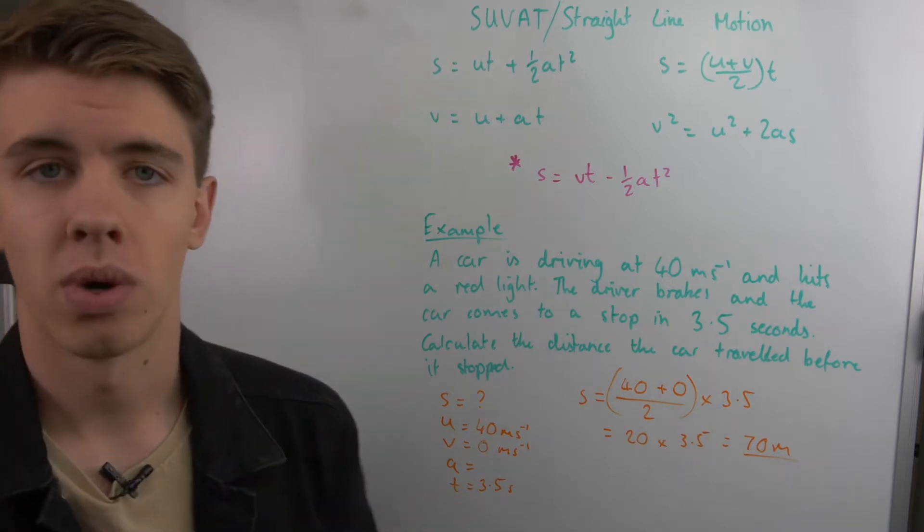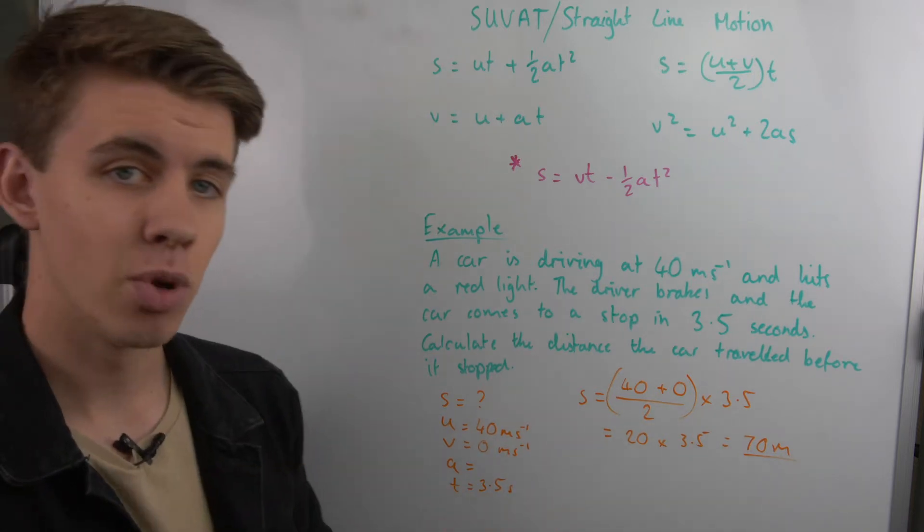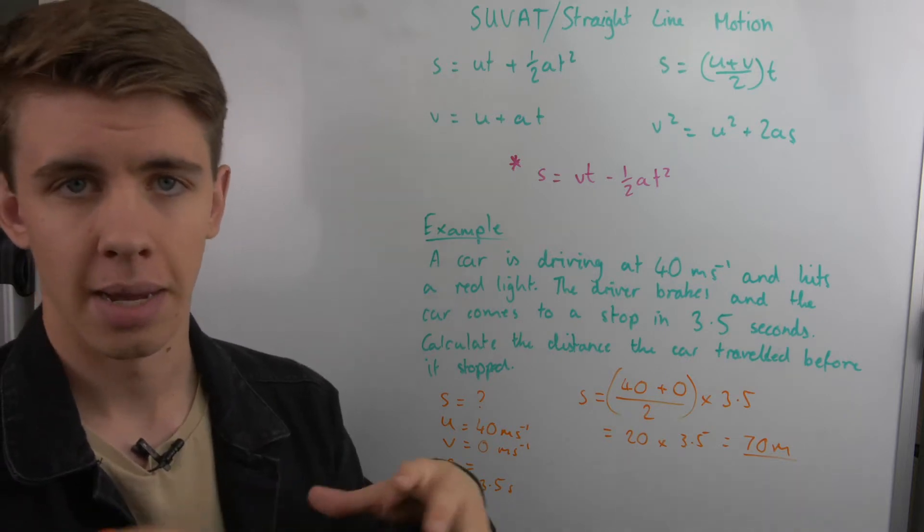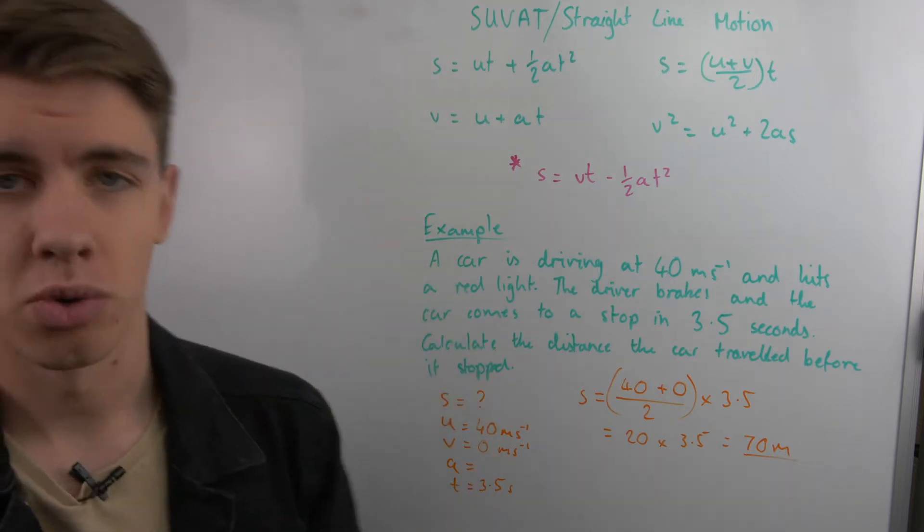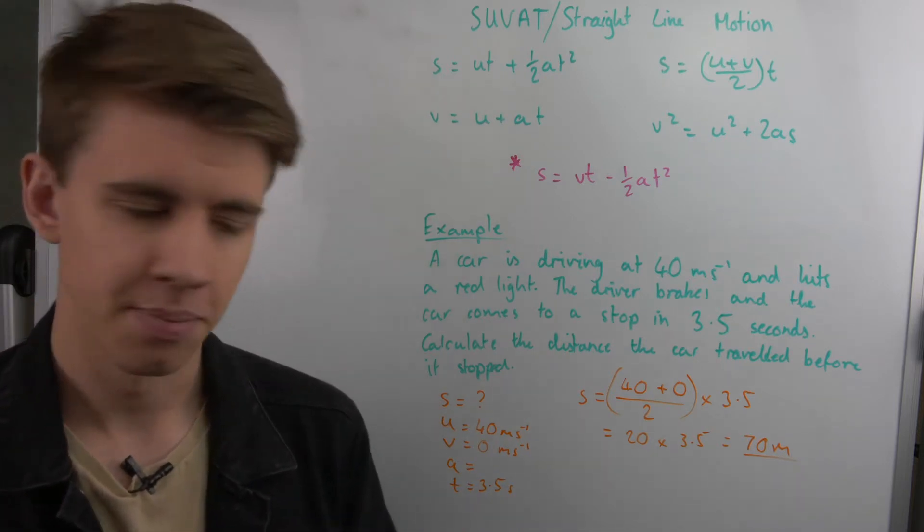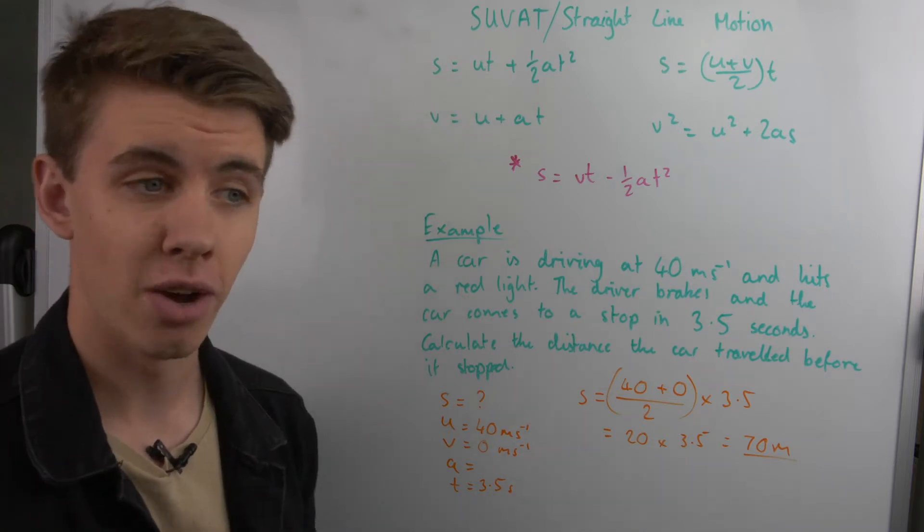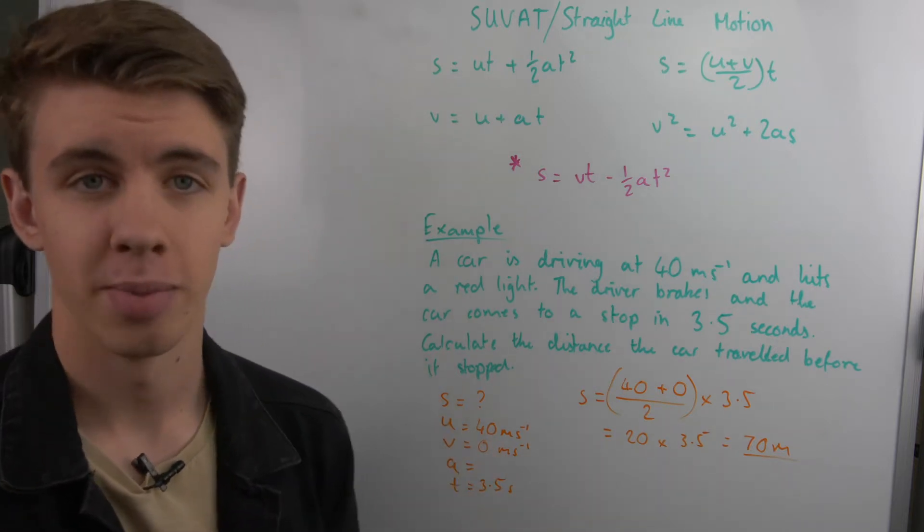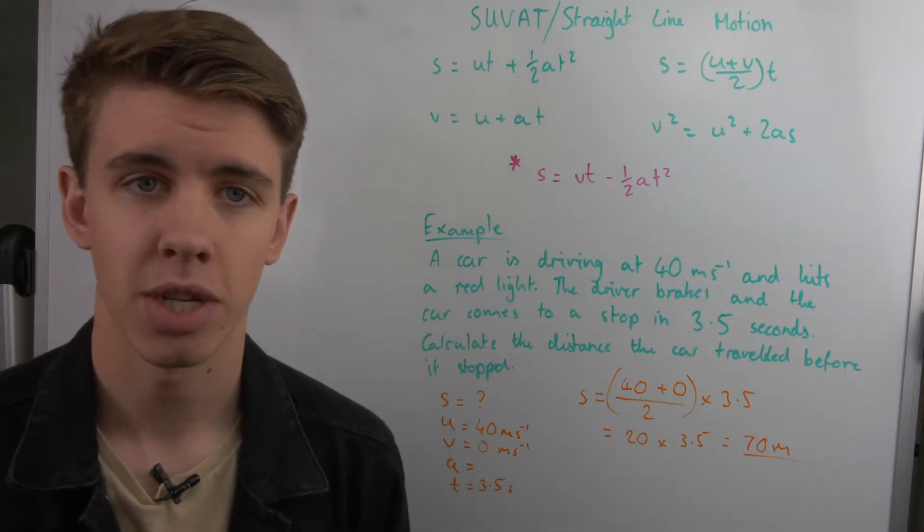These SUVAT equations will go on then to help you in projectile motion also. In projectile motion, you can use the exact same equations, except you have to split your motion into vertical and horizontal forces or paths. Your vertical paths, what you'll find is they tend to like having something fall from a building. And so in that case, they will never tell you what the acceleration is, because you should already know that if something's falling from a building, its acceleration should always be due to gravity, and so its acceleration should always be 9.81 for vertical questions.